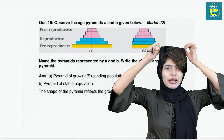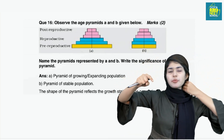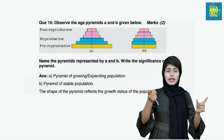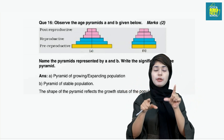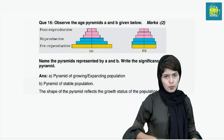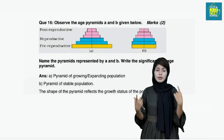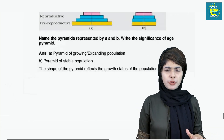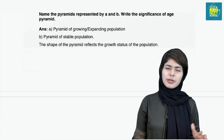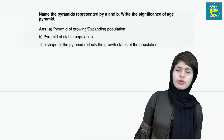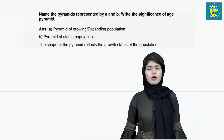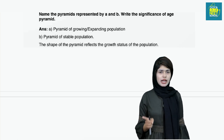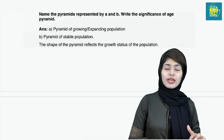Observe the age pyramids A and B given below. A represents the pyramid of a growing or expanding population. B represents the pyramid of a stable population. The significance of the age pyramid is that by looking at the shape of the pyramid we can determine the population growth status.